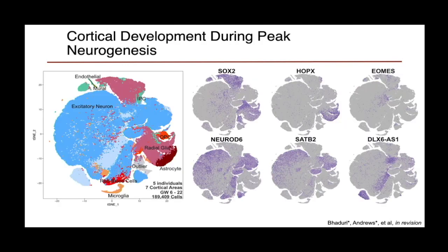We performed single-cell RNA sequencing using five individuals from the primary data across seven cortical areas, looking from gestational week six to 22, obtaining nearly 200,000 cells. We have the major cell populations that you would expect: progenitors marked by SOX2, HOPX-labeled outer radial glia — an important subtype of radial glia the Kriegstein lab has long been interested in — intermediate progenitor cells labeled by EOMES, a variety of neurons marked by NEUROD6, upper layer neurons marked by SATB2, and a population of inhibitory neurons.